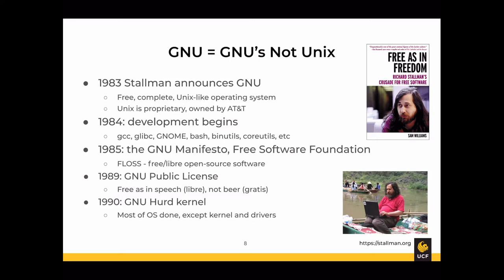Development began in 1984, with more developers joining over time. In 1985, Stallman wrote the GNU Manifesto and created the Free Software Foundation to organize and fund the work. He has this concept of FLOSS — Free/Libre Open Source Software — where freedom means freedom as in speech and rights, not free as in free beer. These concepts were codified in the 1989 GNU General Public License, or GPL.